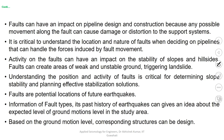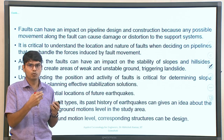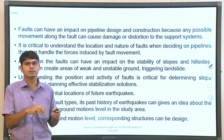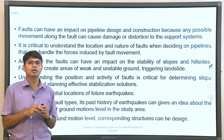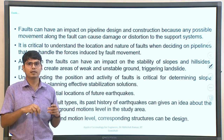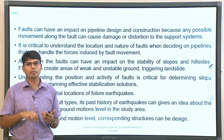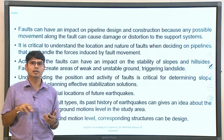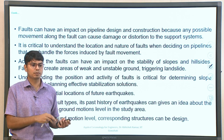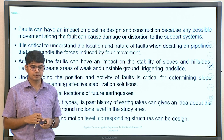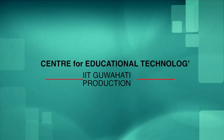I will stop here, and we will discuss some information about the indication of the presence of a fault in a particular region, and then how the potential movement on a fault — witnessed over the period of time — can be represented on paper, so that just by looking at it we can understand what is the governing movement in a particular region. Thank you everyone, and we will continue on this particular topic in the next lecture.